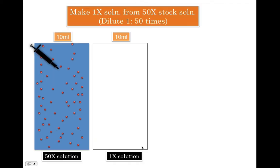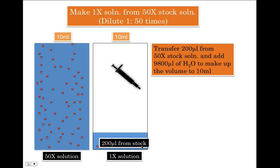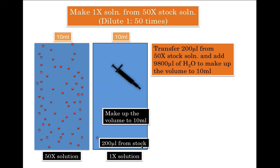Thus to transfer 1 molecule from 50X solution to 1X solution, all you need to do is transfer 200 microliters from 50X solution. And then add 9800 microliters of water to make up the volume to 10 ml. This is how you will prepare 10 ml of 1X solution.